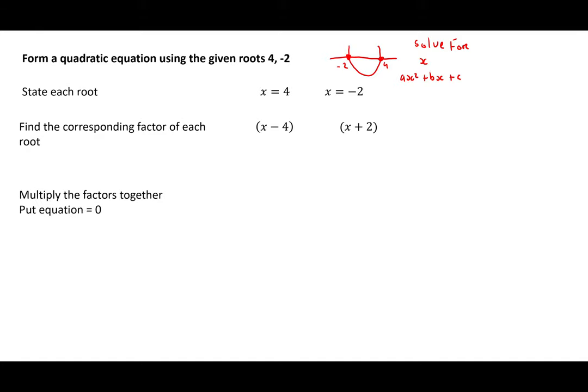Step 3: multiply the factors together and put your equation equal to 0. This gives us x minus 4 times x plus 2. To multiply our brackets together, we take the first value out of the first bracket and multiply it by the second bracket, then take the second value from the first bracket and multiply it by the second bracket. This gives us x times x plus 2, and minus 4 times x plus 2.